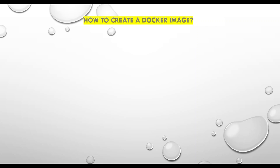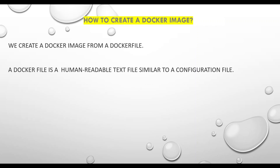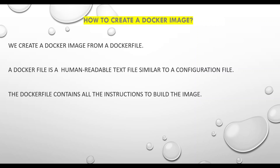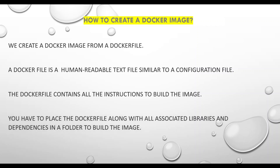Now we will see the steps on how to create a Docker image. We create a Docker image from a Dockerfile. A Dockerfile is a human-readable text file which is similar to a configuration file. The Dockerfile contains all the instructions to build the image — we write all the instructions on how to build that image inside this file. You have to place the Dockerfile along with all the associated libraries and dependencies in a folder to build the image.